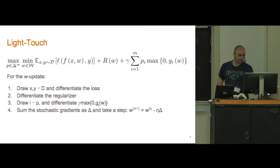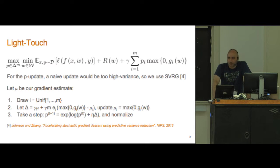For the p update things are more complicated, because if we did this in a naive way then we'd wind up with stochastic gradients with respect to p that were too high variance and ultimately our convergence rate would not be as good as we were hoping for. So what we're going to do is use an SVRG-like algorithm to reduce the variance of our stochastic gradients.